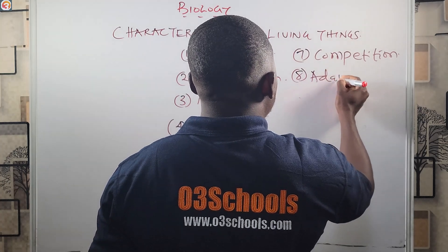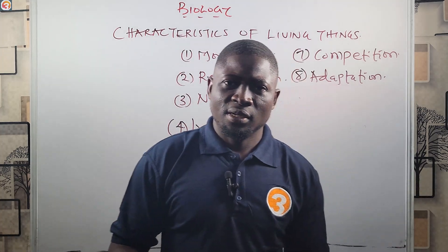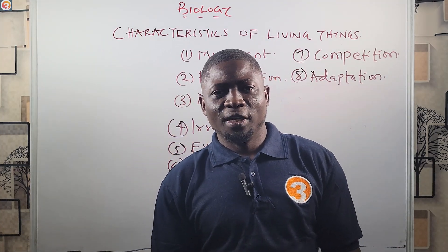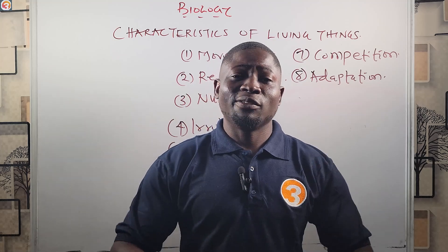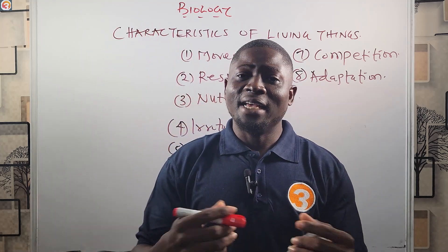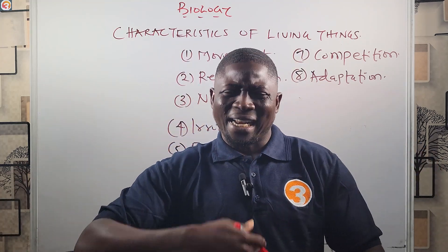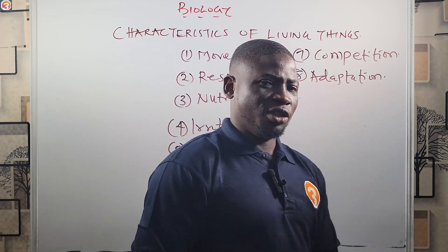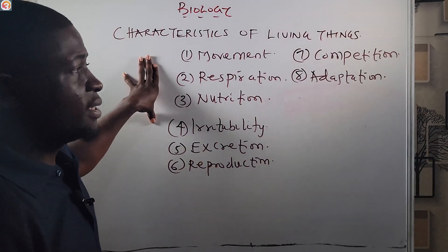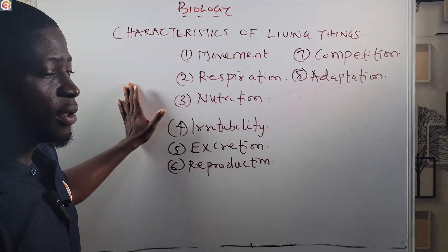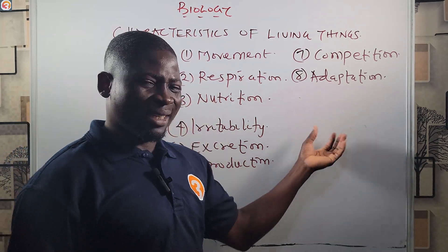The last characteristic we'll look at is adaptation — how living organisms adapt to changes in their environment. For example, when the rainy season comes it gets cold, and when the dry season comes conditions change drastically. How organisms are able to adapt to these changes is what adaptation is about. So the characteristics of living things are: movement, respiration, nutrition, irritability, excretion, reproduction, competition, and adaptation.